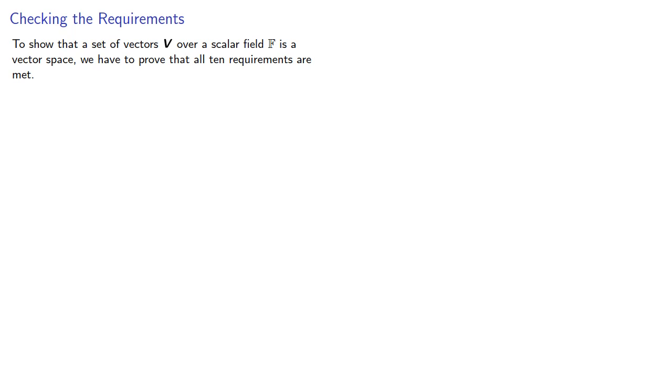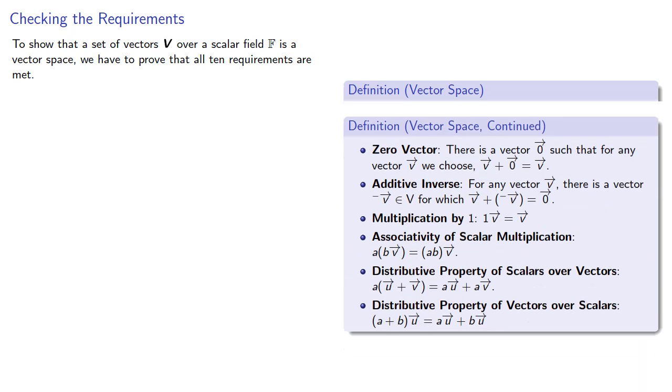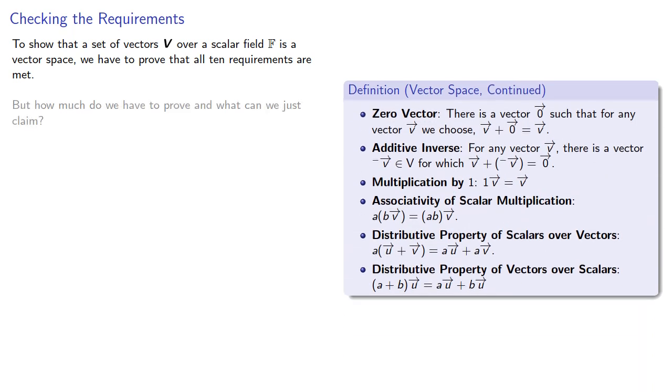To show that a set of vectors V over a scalar field F is a vector space, we have to prove that all ten requirements are met. But how much do we have to prove, and what can we just claim?